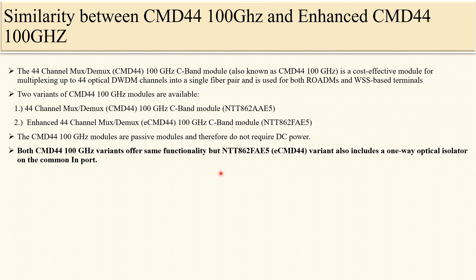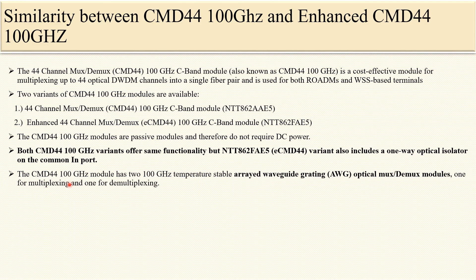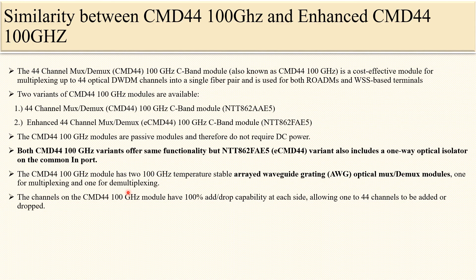Both the CMD44 and eCMD44 100 GHz provide the same 44-channel MUX/DMUX functionality, but the enhanced CMD44 variant also includes a one-way optical isolator on the common input — this is the key difference we will discuss in the next slide. The CMD44 100 GHz module has a 200 GHz temperature-stable AWG optical MUX/DMUX module, meaning two AWGs: one for multiplexing and one for demultiplexing. The channels on CMD44 100 GHz modules have 100% add/drop facility at each end.